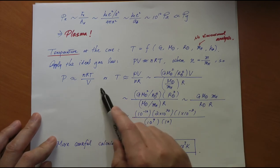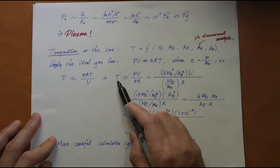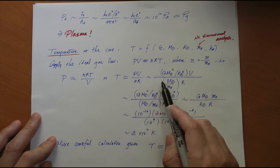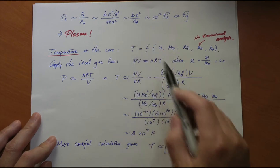From that, we can calculate P, which is nRT over V. Or the temperature, which we really want to know, PV over nR. This is the pressure which we calculated a minute ago, volume of the sun divided by...